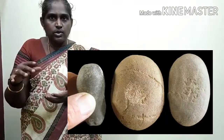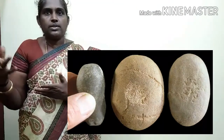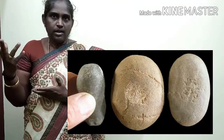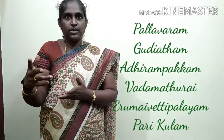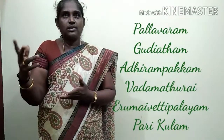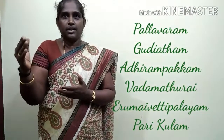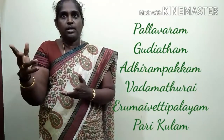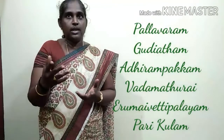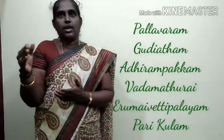Hand axes and cleavers — cleavers meaning small knife-like tools — are the important tools of the Lower Paleolithic period. They used these tools for cutting, digging and piercing. They used hammer stones and spheroids. They chose quartzite pebbles and cobbles as raw materials. These tools are found at Pallavaram, Gudiyam cave, Adhirampakam, Vadamadurai and Ermavivethi Palayam. Gudiyam cave is in Thiruvannamalai district near Poondi reservoir. Adhirampakam is 60 kilometres away from Chennai.